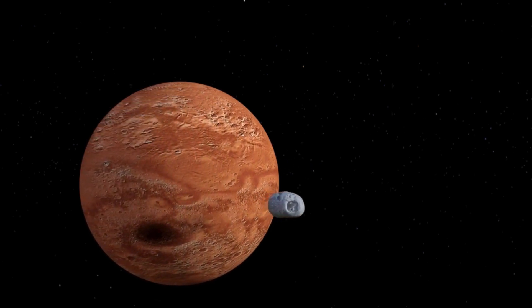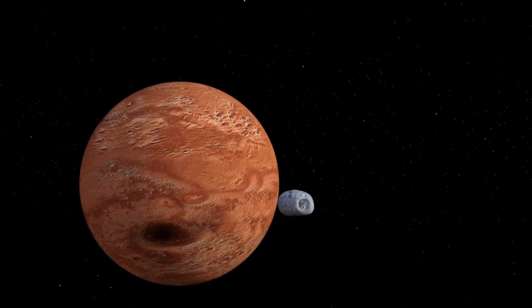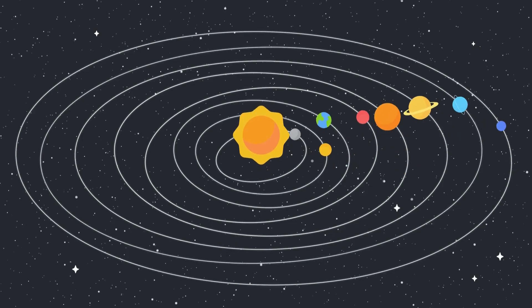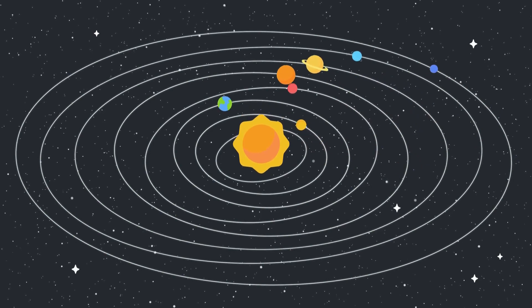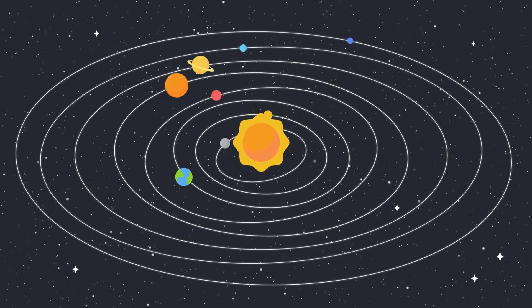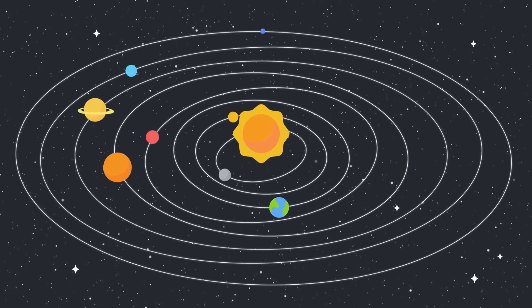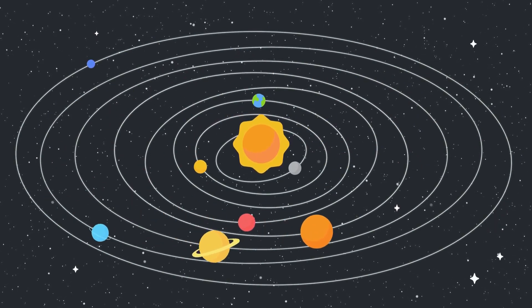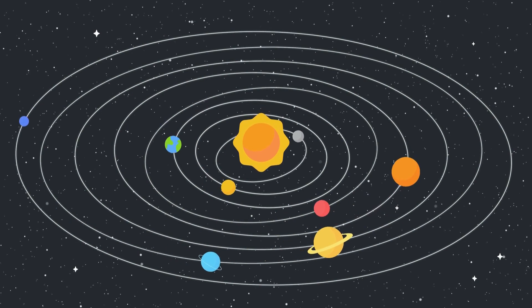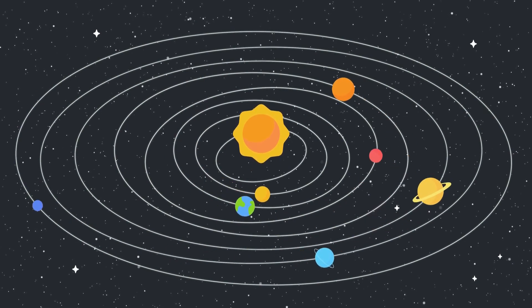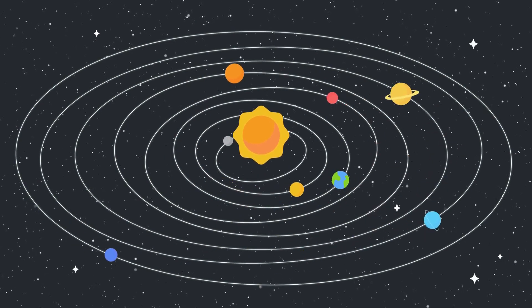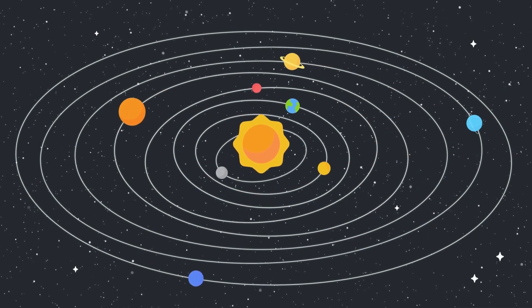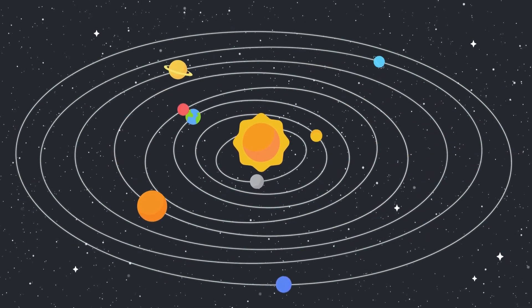Mars' atmosphere has been eroded over time, leading to a thin and inhospitable environment. Understanding the consequences of the absence of a magnetic field is essential for future exploration and colonization efforts on the Red Planet.